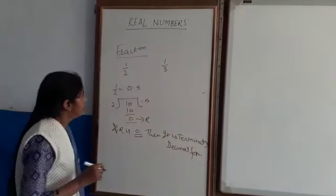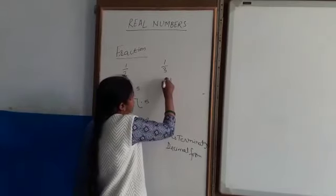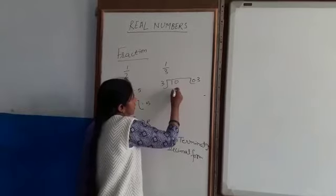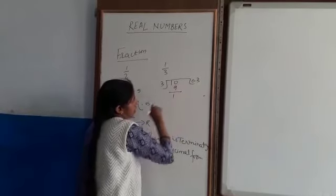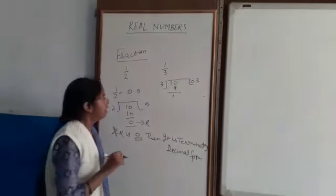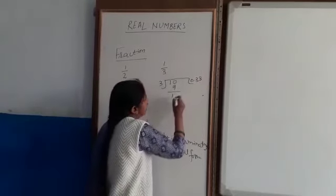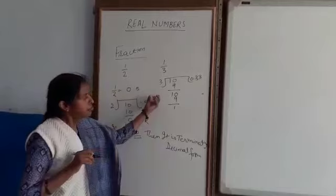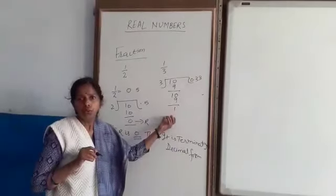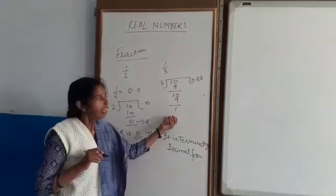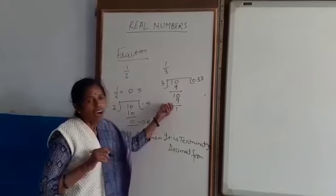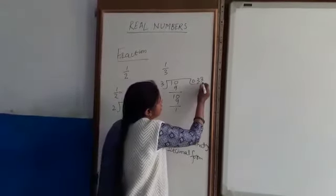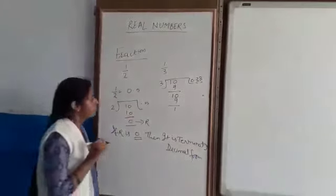But if I change 1 by 3 into decimal form, then 3 into 3 is 9, remainder is 1. I again divide, 3 into 3 is 9, remainder is 1. Here, I am not getting remainder 0. And one more thing, in each case I am getting the remainder 1 and here 3 is also repeating. Therefore, it is known as non-terminating.